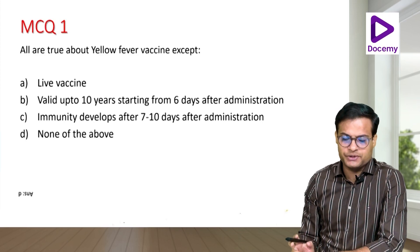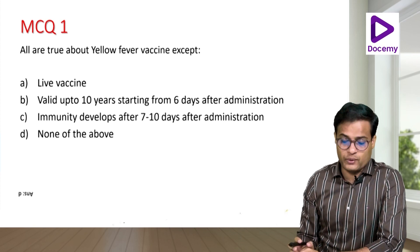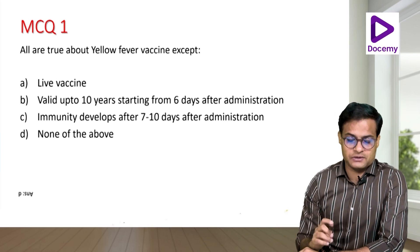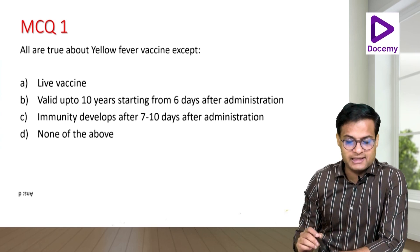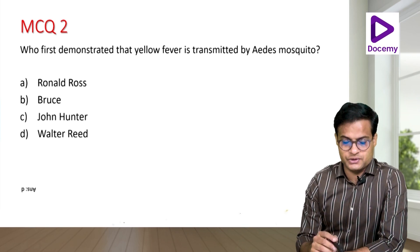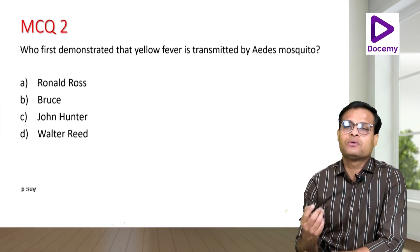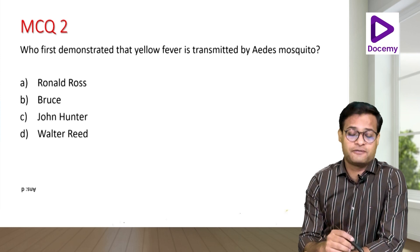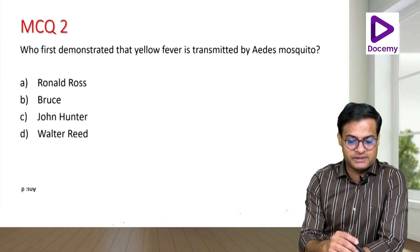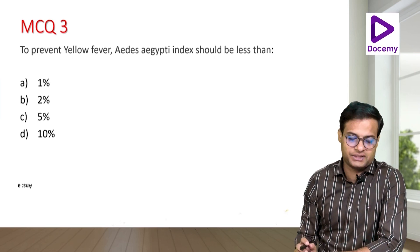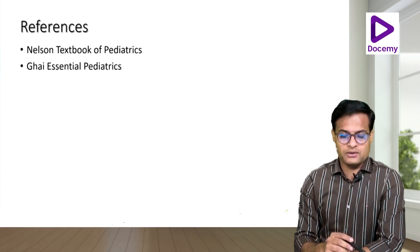Coming to the MCQ: all are true about the yellow fever vaccine except — it is a live vaccine (true), it is valid up to 10 years starting from 6 days after administration (true), immunity develops after 7 to 10 days of administration (true) — so the answer is none of the above. Second question: who first demonstrated that yellow fever is transmitted by Aedes aegypti mosquito? The answer is Walter Reed. Ronald Ross is known for malaria and mosquitoes; Bruce connected the tsetse fly to African sleeping sickness. Third question: to prevent yellow fever, the Aedes aegypti index should be less than 1%. This presentation was based on Nelson's Textbook of Pediatrics and OP Ghai.